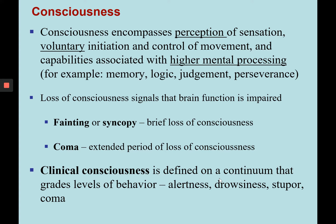Examples of impaired consciousness include fainting, also known as syncope, which is a brief loss of consciousness, and a coma, which is an extended period of loss of consciousness during which someone cannot be alerted by shaking. Clinical consciousness is graded on levels: how alert someone is, whether they show drowsiness, whether they're paying attention, in some type of stupor, or in a coma.